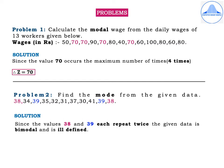Problem 2: Find the mode from the given data: 38, 34, 39, 35, 32, 31, 37, 30, 41, 39, 38. Solution: Since the values 38 and 39 each repeat twice, the given data is bimodal and is ill-defined. Note that Problems 1 and 2 are two-mark questions; for Problem 2 there is no need to use the empirical formula — you can simply state that the given data is bimodal and ill-defined.